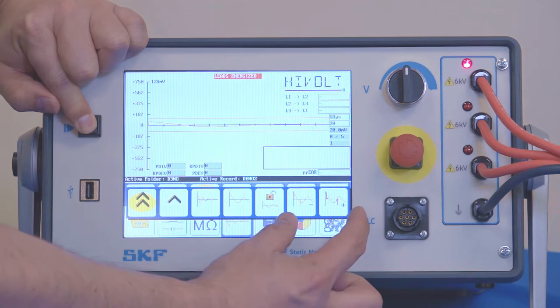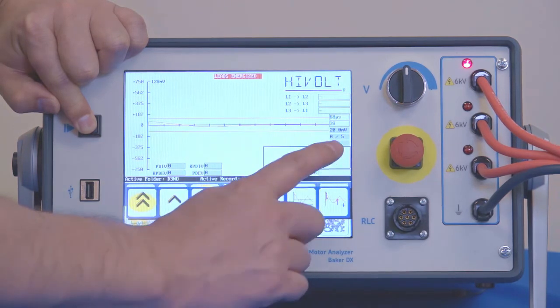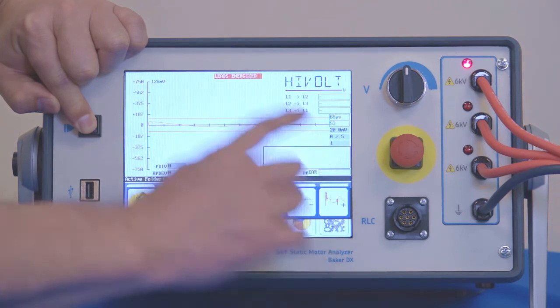You have two new scales that you can actually scale in on the actual partial discharge activity. Typically we like to have this on the lowest scale which is indicated by this one right there.